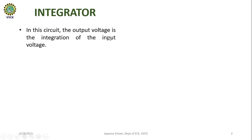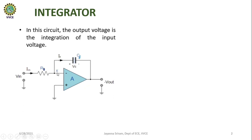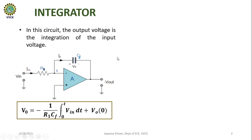In this circuit, the output voltage is the integration of the input voltage. This is the circuit diagram representation of an integrator circuit where the capacitor is used as feedback. The input is applied to the inverting terminal through resistor R1, and the non-inverting terminal is grounded. The output voltage expression for this integrator circuit is given by this expression, and you can easily say that the output voltage is the integration of the input voltage.